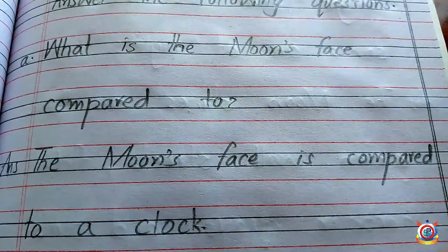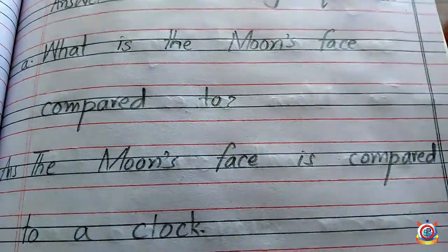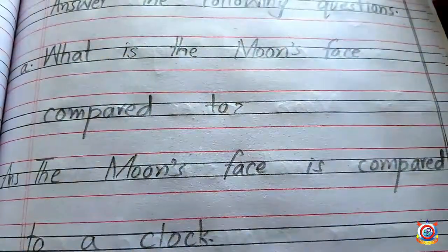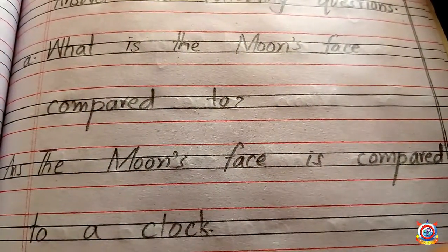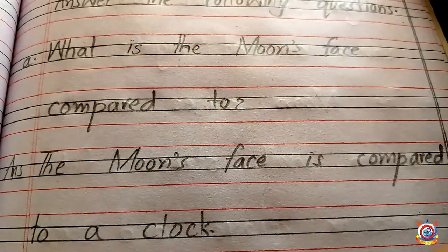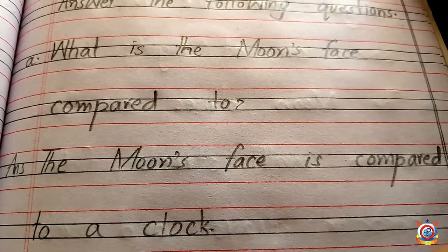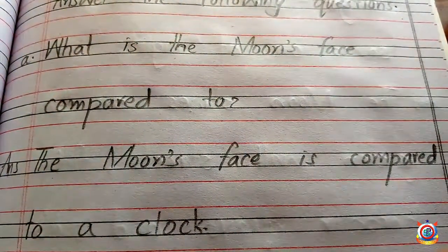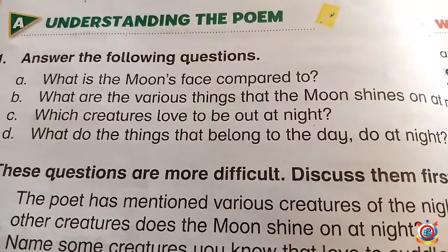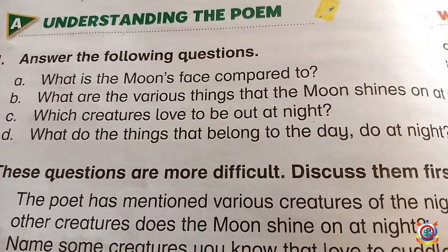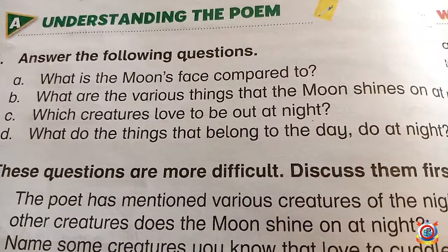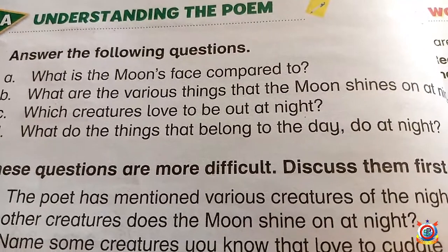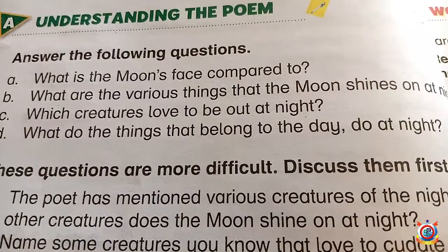This is how you are supposed to write the question and answer in your neat notebook. Question: What is the moon's face compared to? Answer: The moon's face is compared to a clock.